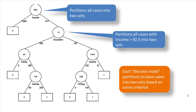So what does a decision tree actually do? Let's examine each of the nodes carefully. If you look at this particular node, 92.5 — what we are saying is there were 1,083 cases where the income was less than or equal to 92,500, and there were 417 cases where the income was greater than 92,500.